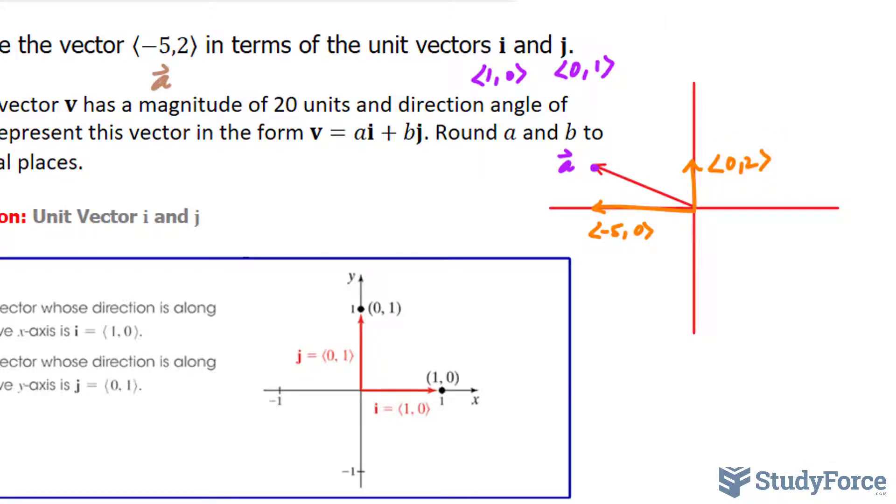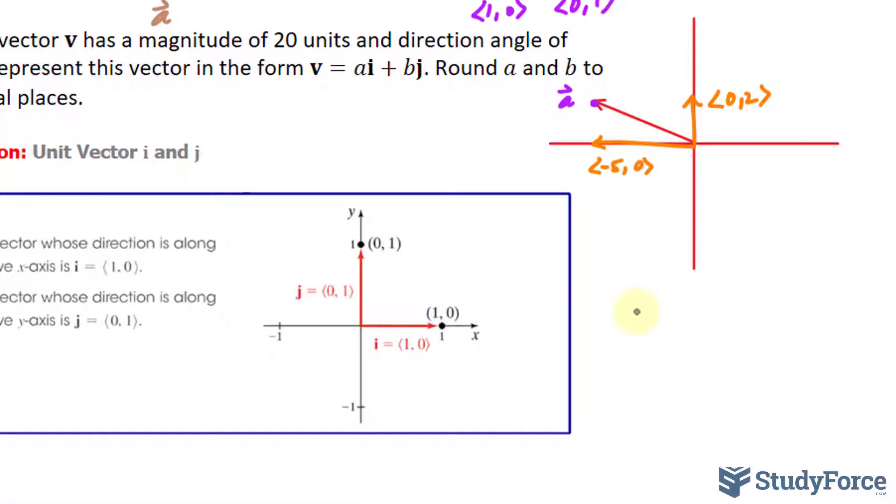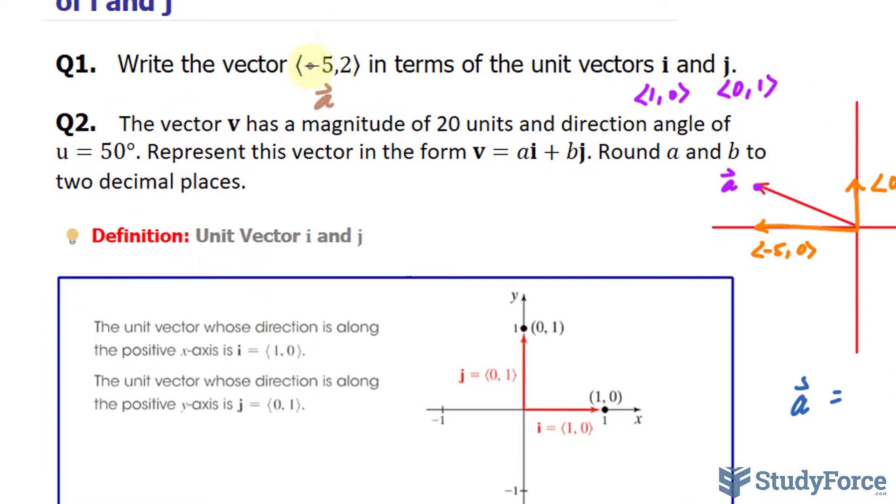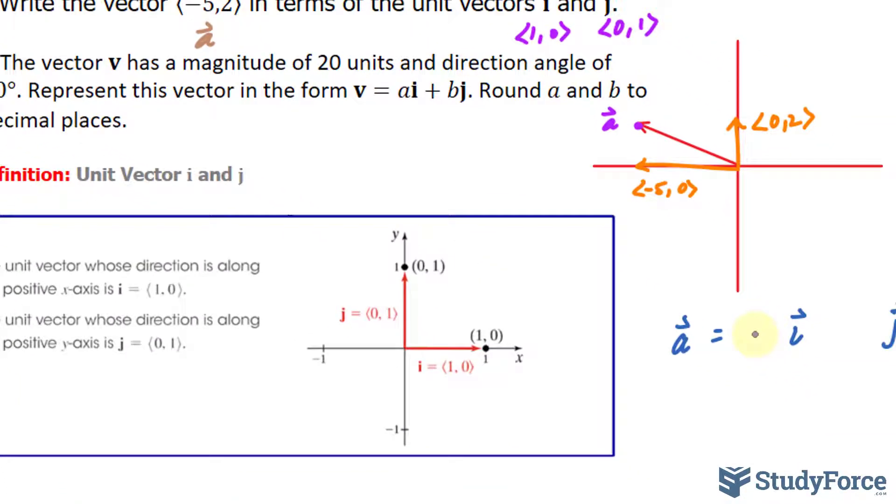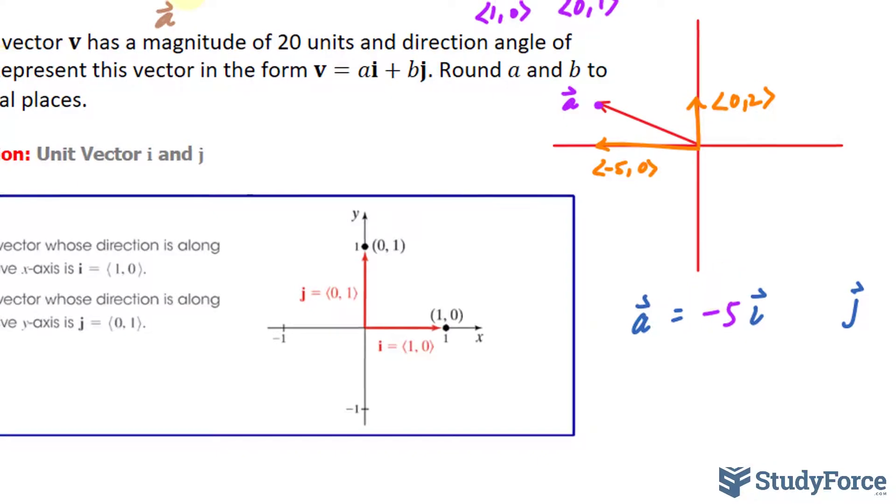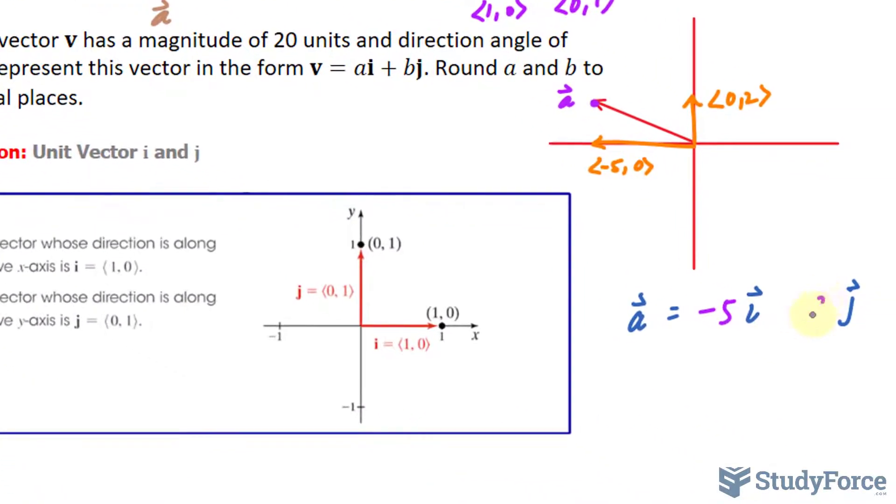Now normally when you write a vector in terms of i and j, you write it like this, where you have a = vector i and vector j, and the x component of our vector, -5, gets multiplied to this vector. This 2 is written as the scalar for this vector.